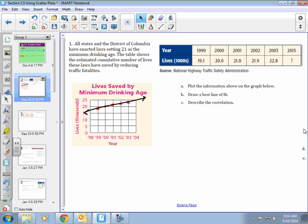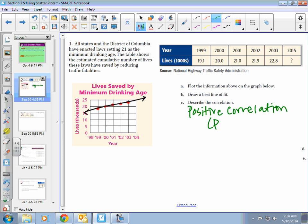Part C, we need to describe the correlation. The way we talk about it is positive, negative, or there's no correlation. In this case, it looks like I have a positive slope, and all the points seem to line up pretty closely. Since it has a positive slope, it is a positive correlation. Let's make a note, because it's a positive slope.